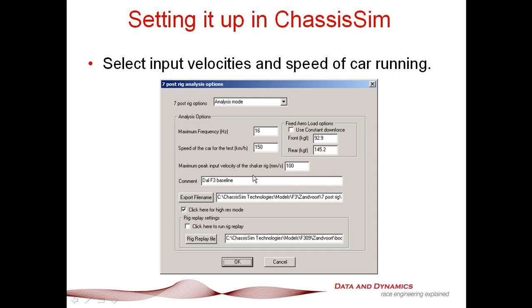Now, the other thing is the maximum peak input velocity of the shaker rig. Typically, the way you would determine that is you look at your damper velocities, and as a rough rule of thumb, I would divide those by about anywhere between 2 to 4. Some rough rules of thumb: 50 mil gives you a pretty smooth circuit, 100 is ballpark really rough, 150 mil or above. Then, you can set up this log. You put in a comment, you put in an export file name, and if you want, you can also put out here for high-res mode. And if you want to validate this against your shaker rig data, you can click here to run a rig replay. And what that will do is basically give you a whole rig replay option.